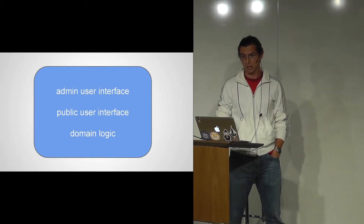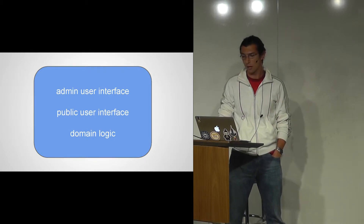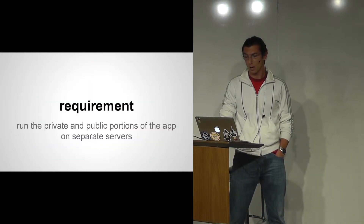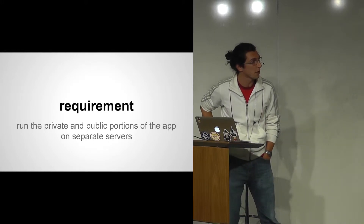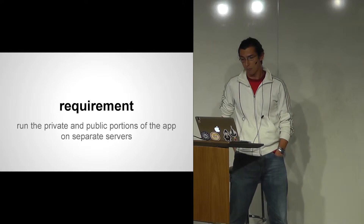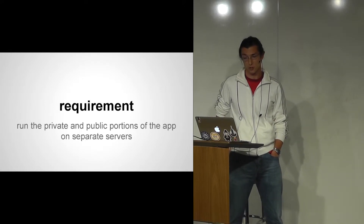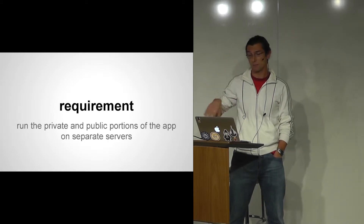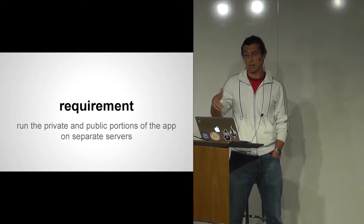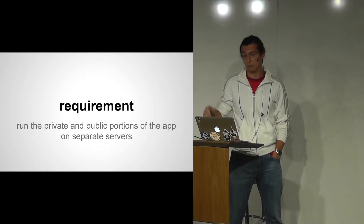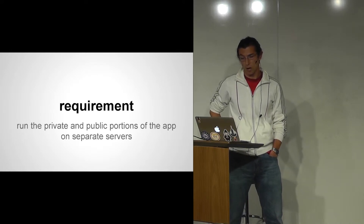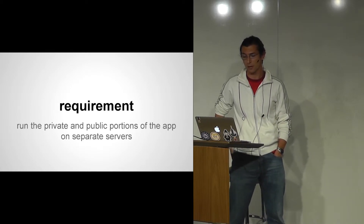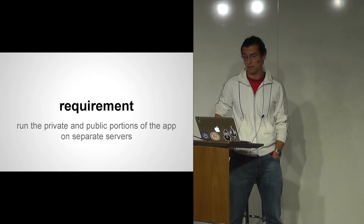The app had two parts: an admin user interface and a public user interface. It was under development for a couple of months, and a total of five developers were working on it. A requirement came in to run the admin and public portions of the app on separate servers — to lock administration interfaces behind a VPN, to stop admin deployments affecting the public portion, and to separate the load between the two portions, the public being vastly more popular than the admin.